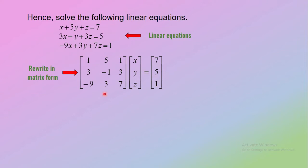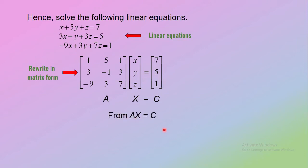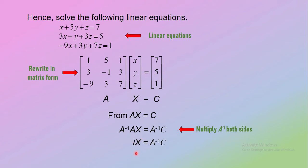You can see that the coefficient matrix equals matrix A — you can refer to the question — so label it as matrix A. The variable matrix is labeled as X and the constant matrix as C. Why can't we label it as matrix B? Because matrix B already exists. To solve for x, y, and z, deduce from AX equals C by multiplying on the left by A inverse. A inverse times A equals the identity matrix, and identity times X equals X itself.